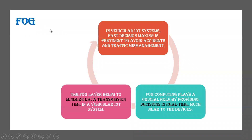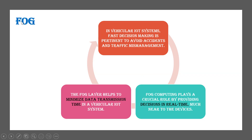In the fog computing layer, data transmission time is minimized because it has many nearby devices, making data transmission very quick compared to the cloud. When using fog computing for real-time decision-making, you can choose fog because of this minimized data transmission. In a vehicular IoT system, fast decisions can be made using fog, which can help prevent accidents and avoid mismanagement in traffic.